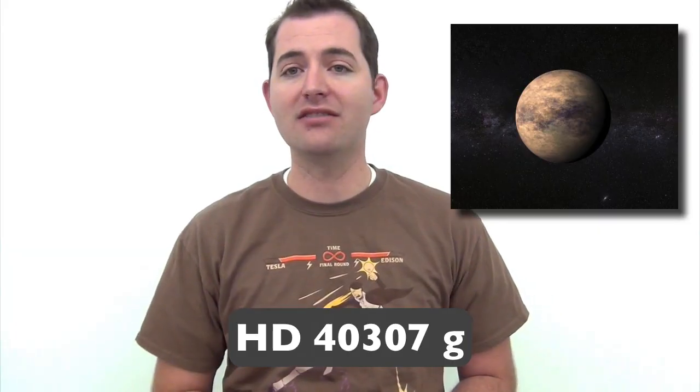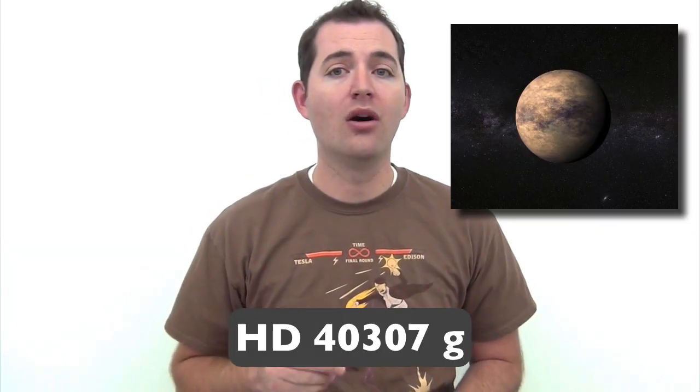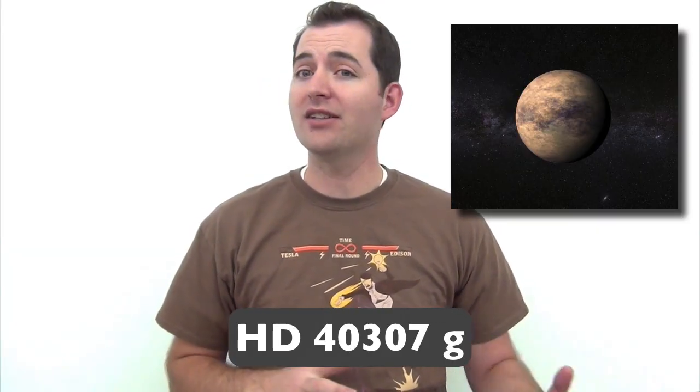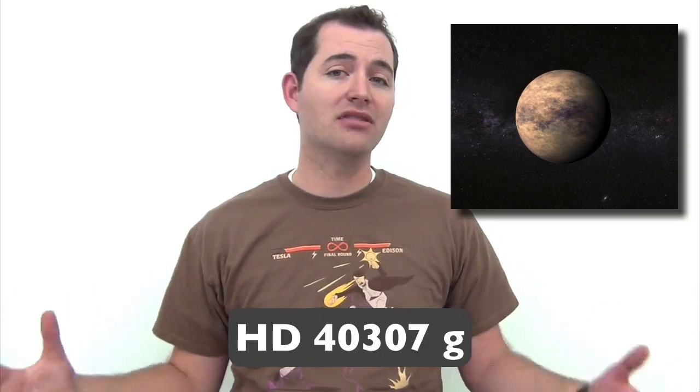Another example is HD 40307g. Now this planet is found smack dab in the middle of its star's circumstellar habitable zone or Goldilocks zone. The difference from Earth though is it's seven times larger than Earth.